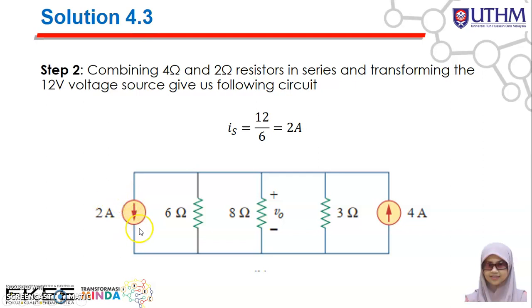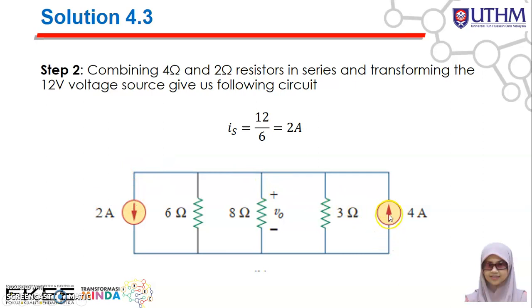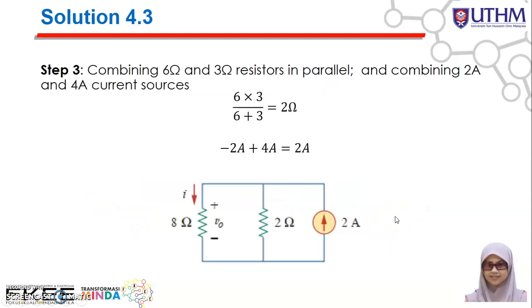So now you have: 2 amperes connected in parallel with 6 ohms, connected in parallel with 8 ohms, connected in parallel with 3 ohms, and connected in parallel with the 4-ampere source. To find the voltage at the 8-ohm resistor, simplify the 6-ohm and 3-ohm in parallel first, leaving the 8-ohm alone. Then combine the two current sources: the 2-ampere going up and the 4-ampere going down, so the total current = −2 + 4 = 2 amperes upward.